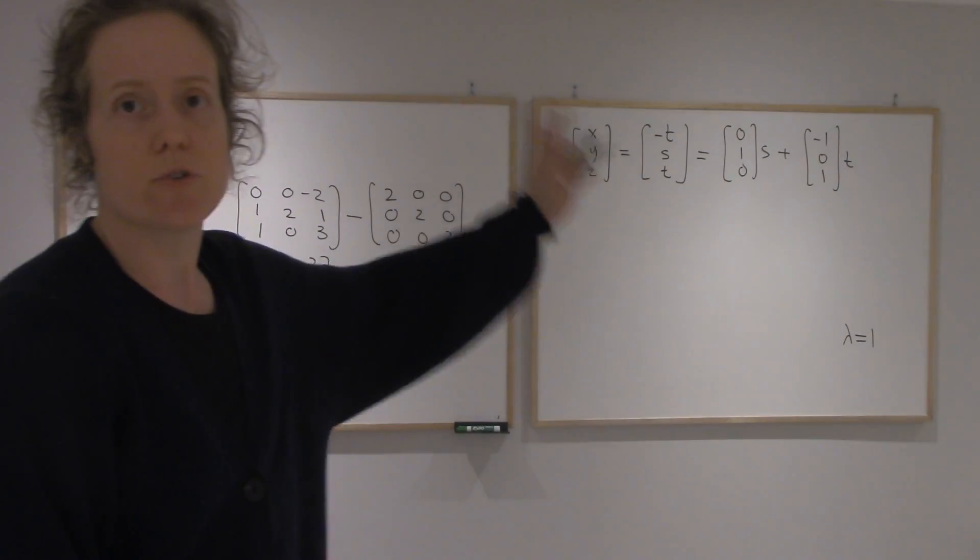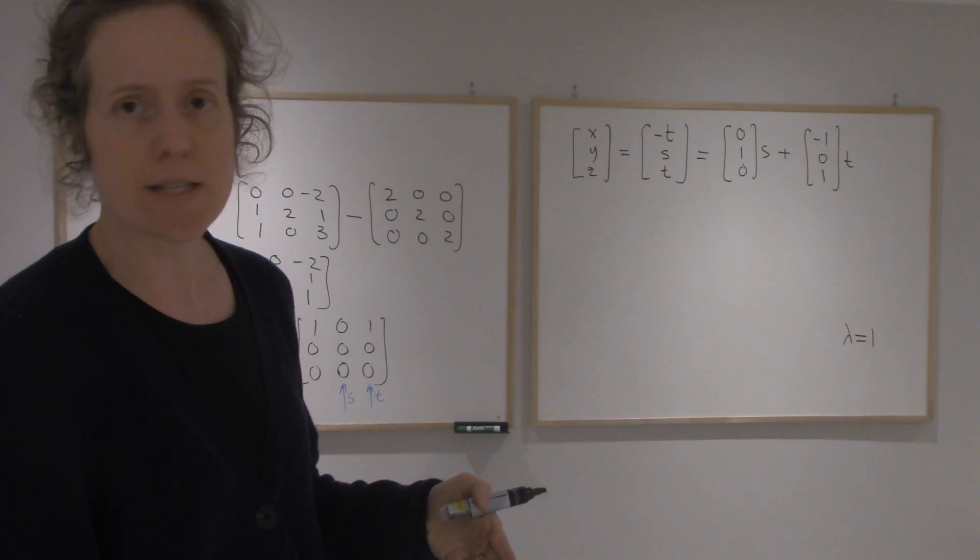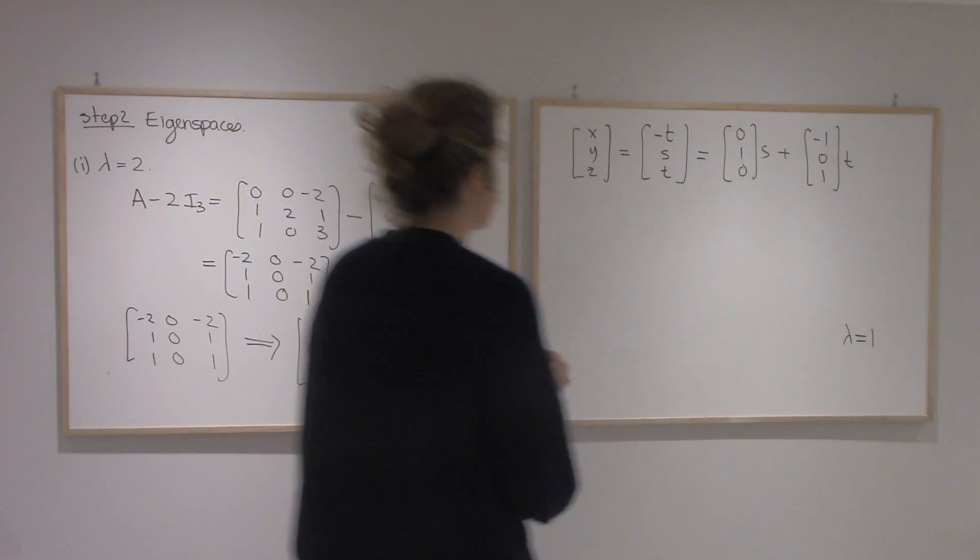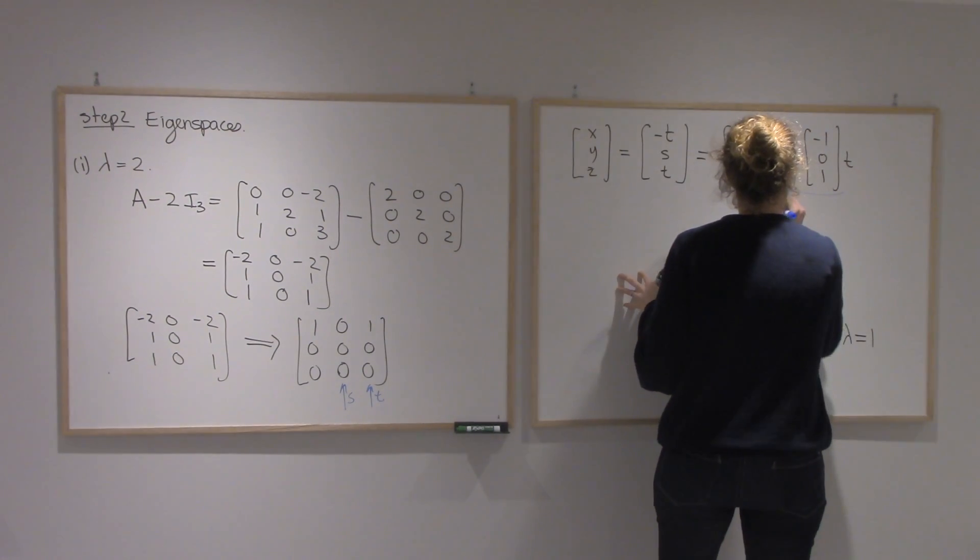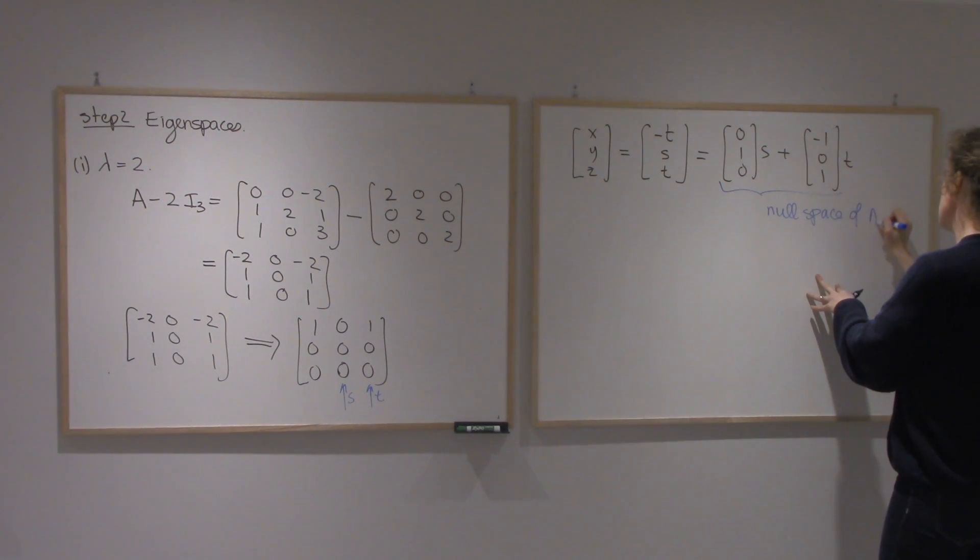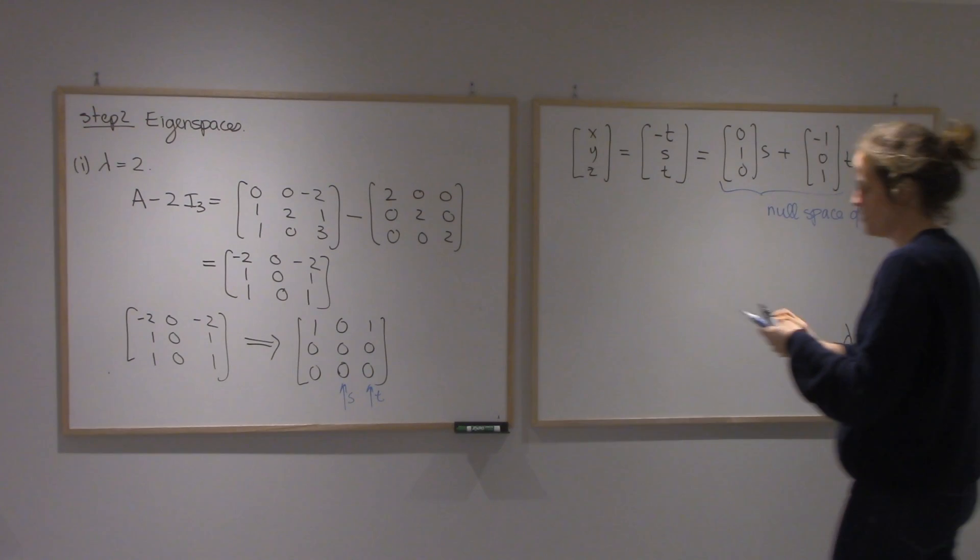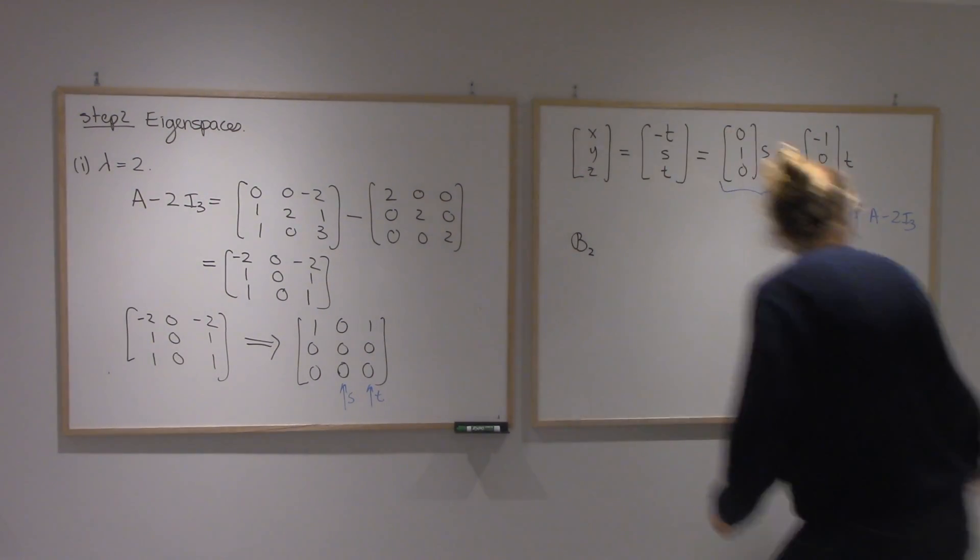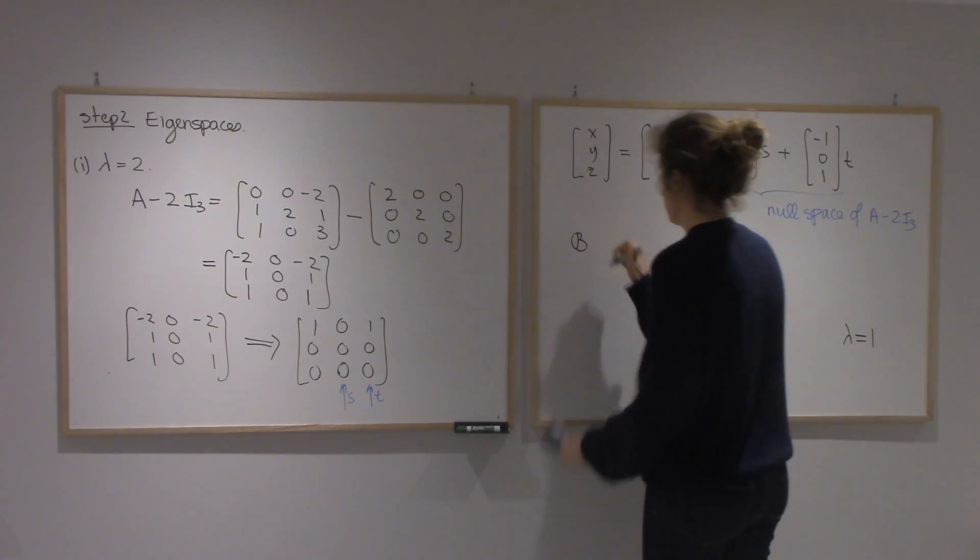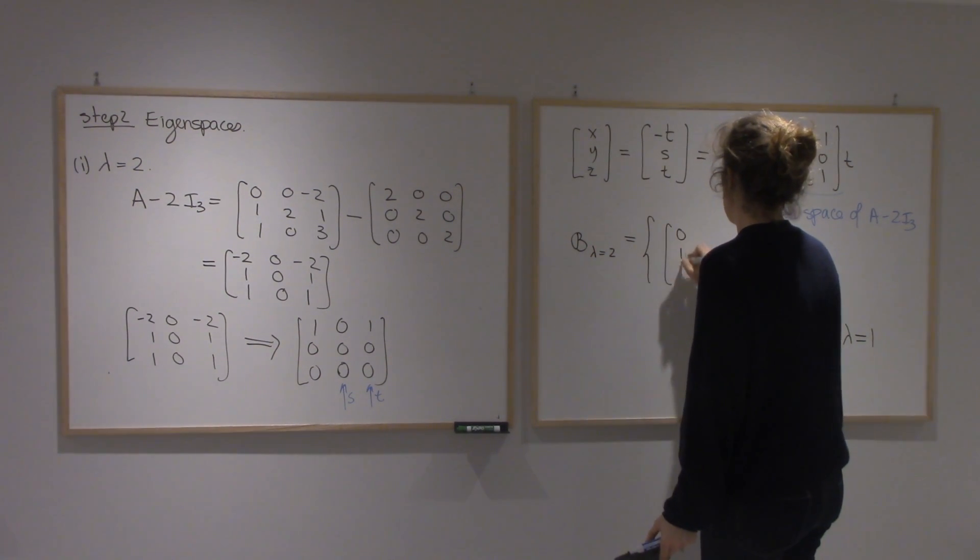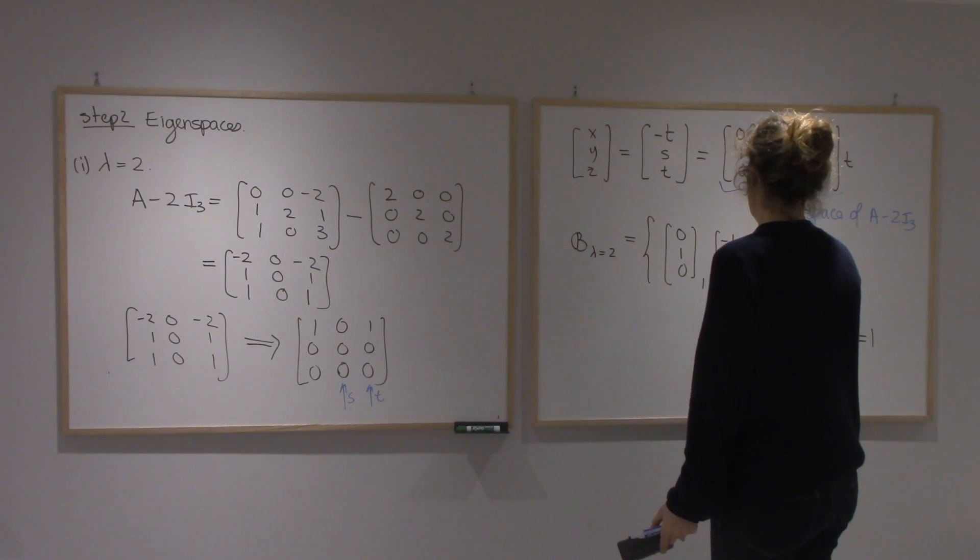So that equation gives you everything in the null space. We're looking for a basis for it. So that's going to turn out to be those two vectors in front of the parameters. So that's the null space of A minus 2I3. So a basis for lambda equals 2 could be 0, 1, 0, minus 1, 0, 1.